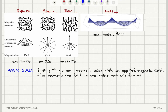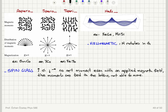Another scenario is helimagnetic ordering. This happens in materials like iron germanium, manganese silicide, etc. The magnetization rotates in the material following a helical structure — that is helimagnetic ordering.